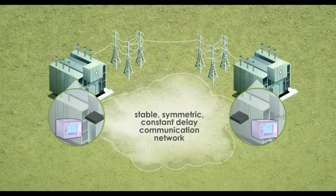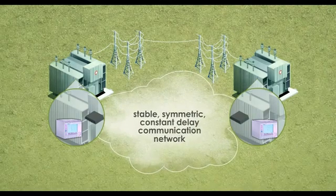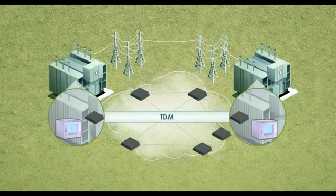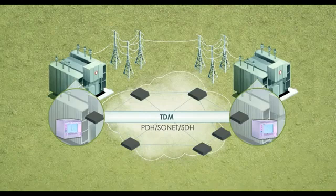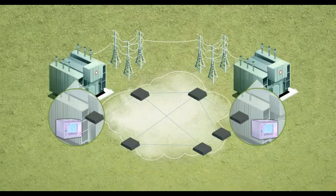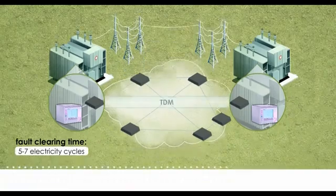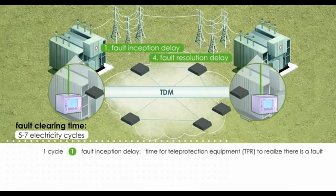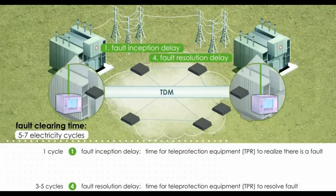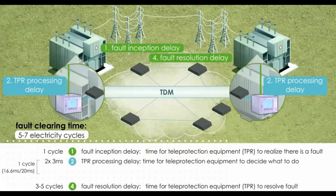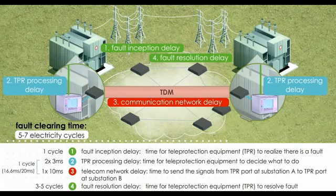Teleprotection relays rely on a stable, symmetric, constant delay communication network for providing a communication channel between them. Traditional communication networking utilizes TDM transmission architectures based on PDH Sonet SDH to provide the communication channel between relays. Today's teleprotection applications are typically developed using a total fault clearing time of five to seven electricity cycles. The fault inception and fault resolution delay take between one and three to five cycles respectively. This leaves one cycle — 16.6 milliseconds in a 60 Hz grid or 20 milliseconds in a 50 Hz grid — for total end-to-end delay comprised of teleprotection equipment delay and communication network delay, typically leaving approximately 10 milliseconds for an acceptable total communication network delay.